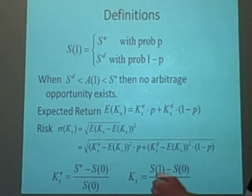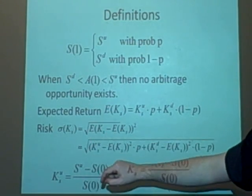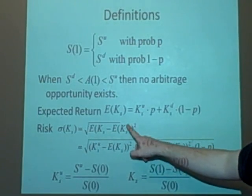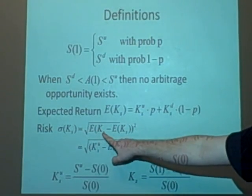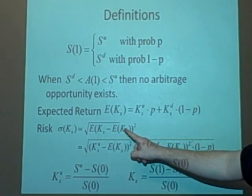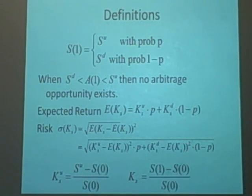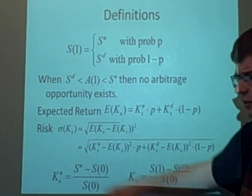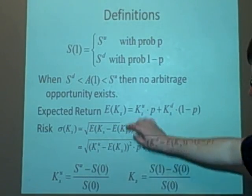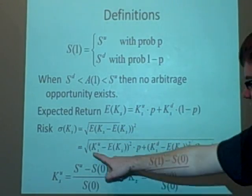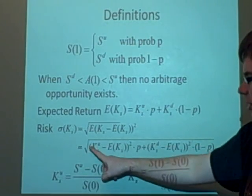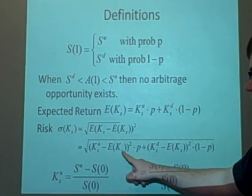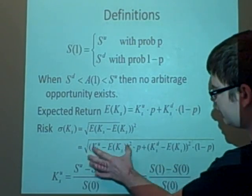Now the risk, this is just working out what the chances are, it's the square root of the expected value of, this is quite a big thing here, KS minus the expected value of KS all squared. So you might have seen that before, this is just a standard deviation.